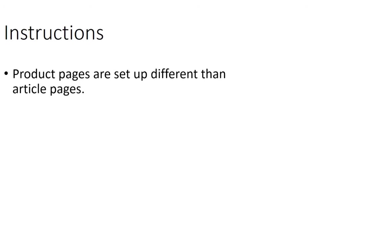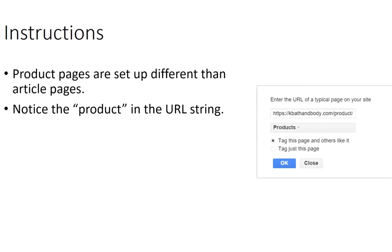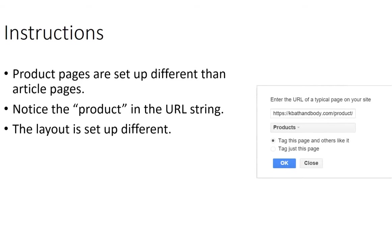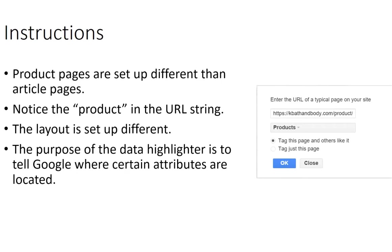Product pages are set up differently than article pages. Notice the product URL in the URL string. The layout from an article page is different from a product page — for instance, an article page doesn't have a price on it, but a product page does. The purpose of the data highlighter is to tell Google where certain attributes are located on that particular web page — whether they're top right, bottom left, right bottom, and so on.